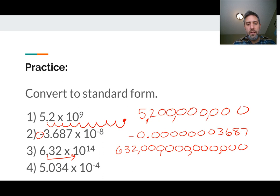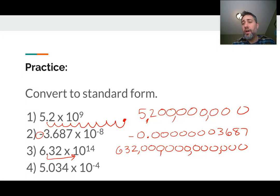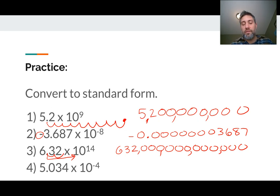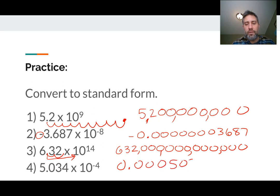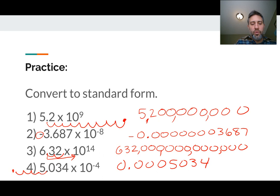Putting the commas in, that looks like 632 trillion. Now I said 12 zeros because the first two moves of the decimal didn't need a zero — I just moved it over 12 times after that. And this last one here, we have a negative four exponent, so we would have 0.000 and then our 5034. If we think of it as moves 1, 2, 3, 4, the first move kind of moved it to the other side of the five, which is why we only have three zeros there.